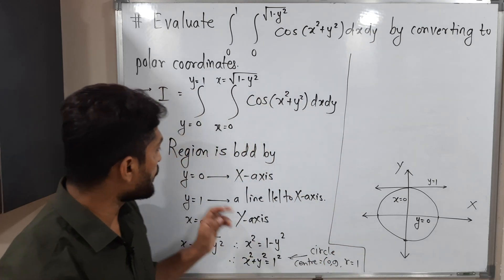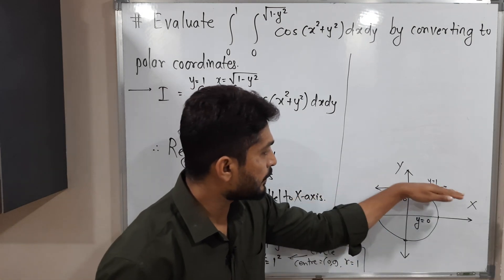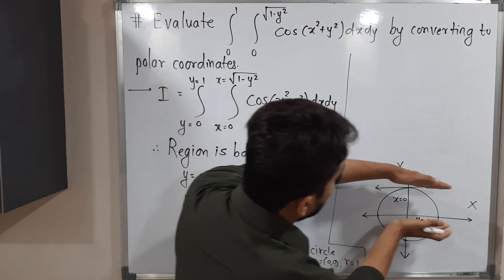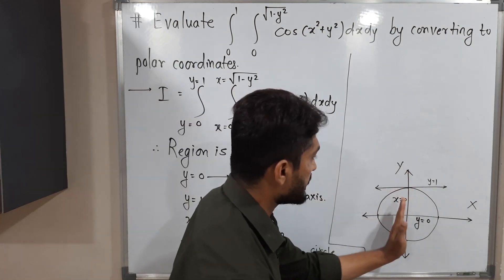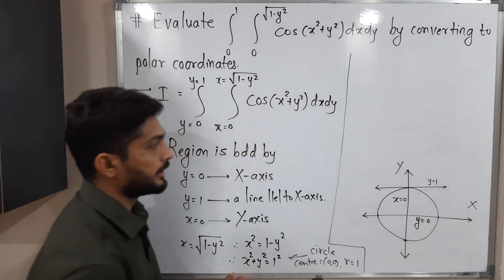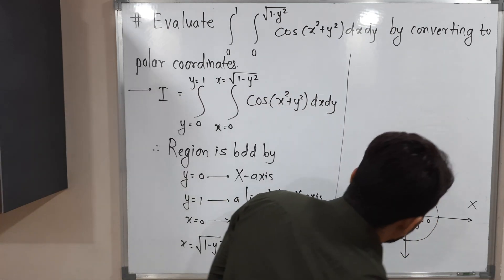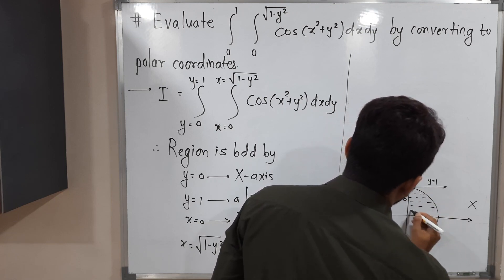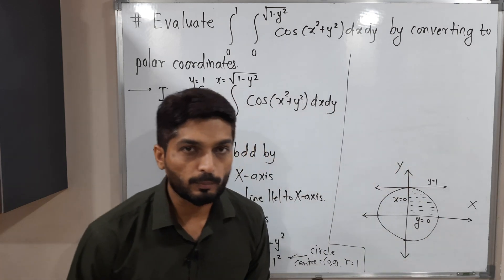The region of integration is bounded by the X-axis (Y=0), the line Y=1, the Y-axis (X=0), and part of the circle. This first-quadrant region between the axes and the circle arc is our region of integration.